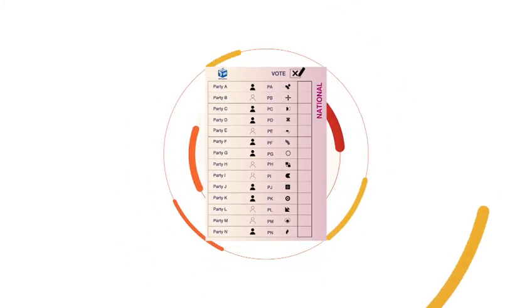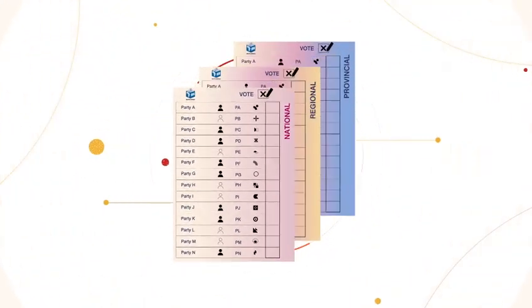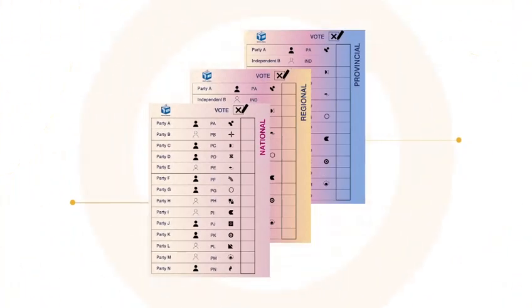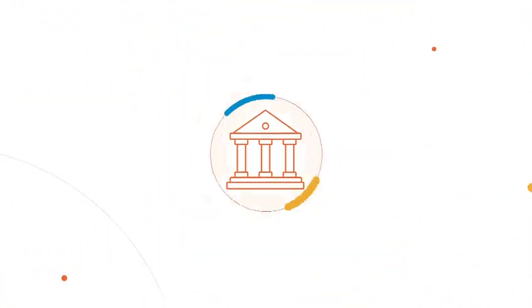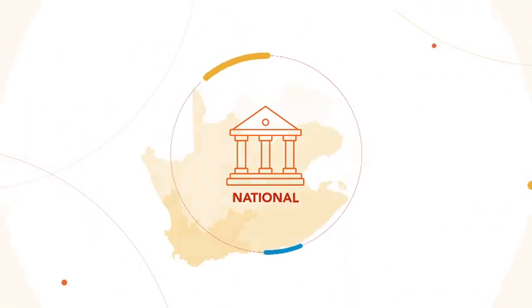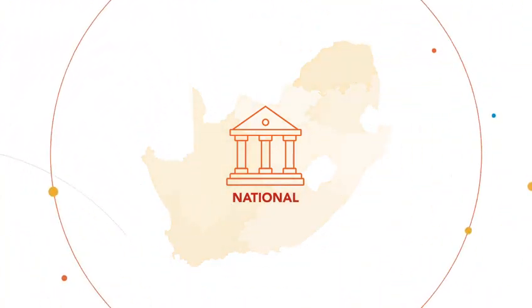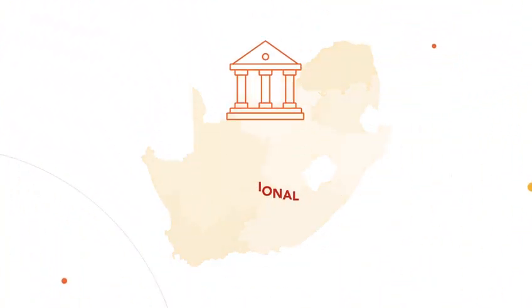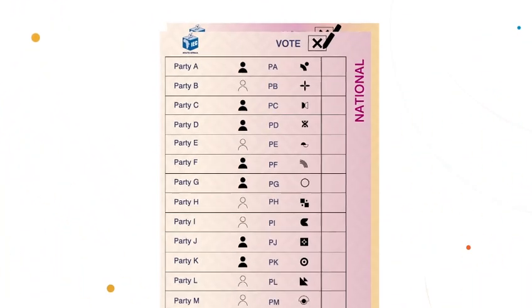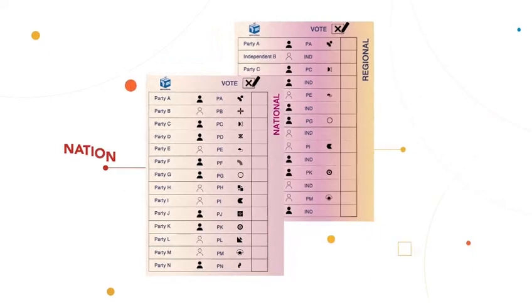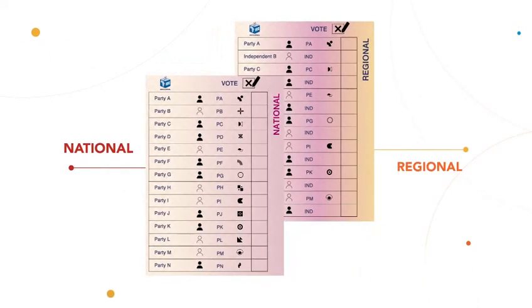National and provincial elections will have three ballot papers. For the National Assembly, who make the laws for the country, you will have two ballots: the national compensatory ballot and the regional ballot.